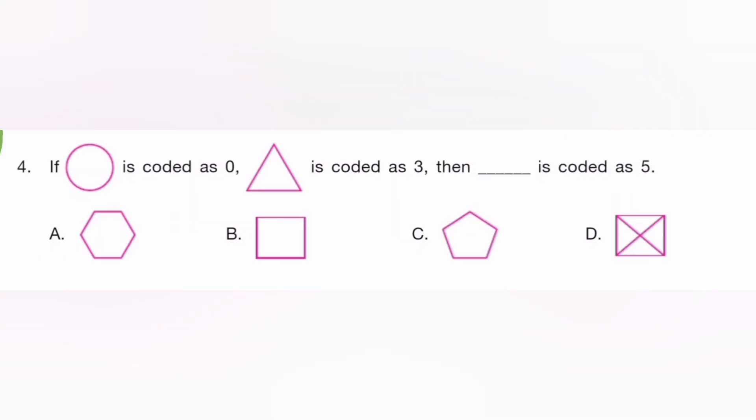If circle is coded as zero and triangle is coded as three, then dash is coded five. The answer is C.